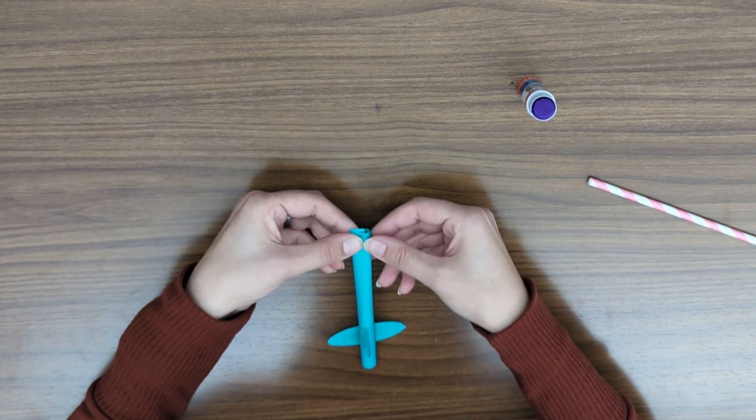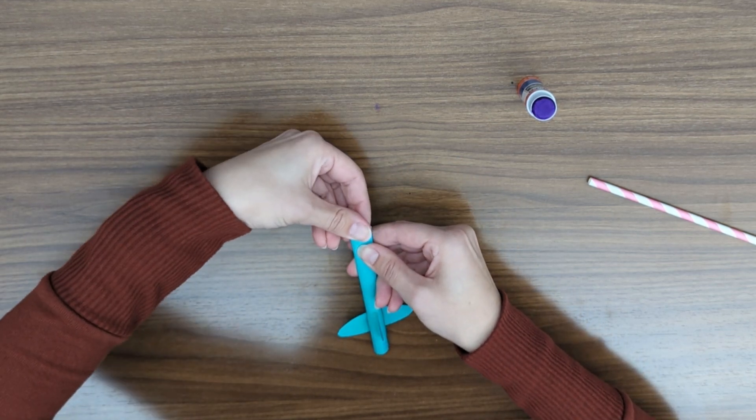Now this is the hardest part. We're going to fold over the other end, the opposite of where you've put the other pieces of paper, so that no air can get out of this end.